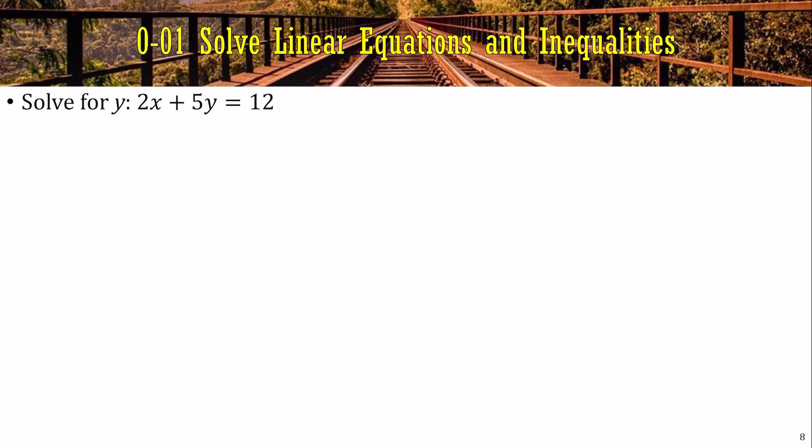This next problem actually has two variables. So we're going to solve for y. So we don't care about anything else. We just want to get the y by itself. So the furthest thing from the y is the 2x. So we'll subtract 2x. So 5y equals 12 minus 2x. And now it's 5 times the y. So we'll divide by the 5. So y equals 12 minus 2x divided by 5.